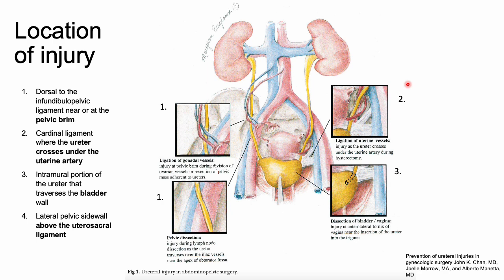The third location is where the ureter traverses the bladder wall. During a hysterectomy when we're taking the bladder down, really knowing where the ureter is at that point is important.